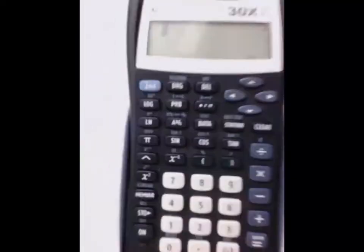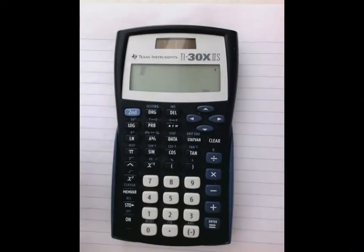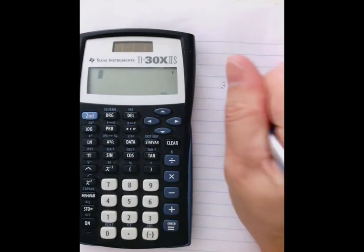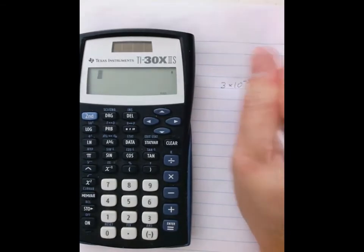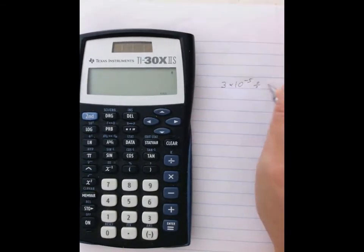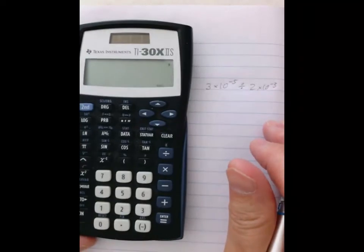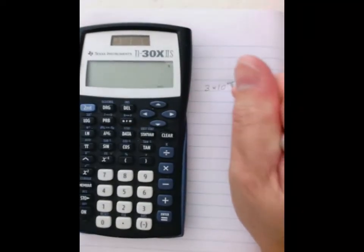Now let me show you how it works. Let's say you have 3 times 10 to the 5th divided by 2 times 10 to negative 3rd. This is supposed to be positive 5.